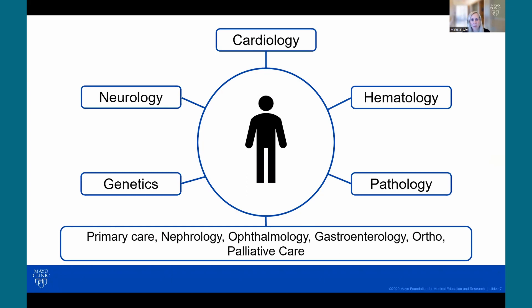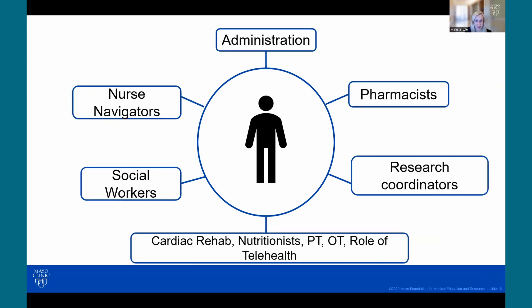When we think about the patient living with amyloid, they're going to be cared for by multiple providers within cardiology, neurology, hematology, genetics, pathology, and of course primary care, nephrology, ophthalmology, gastroenterology, orthopedics, and palliative care. It's important for all of those subspecialties to come together to create an integrative plan with the patient at the center of the plan.